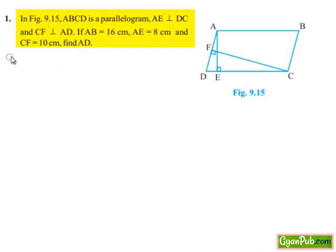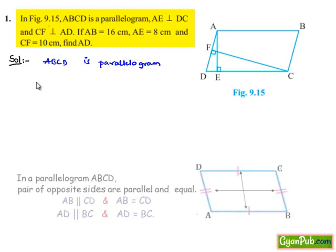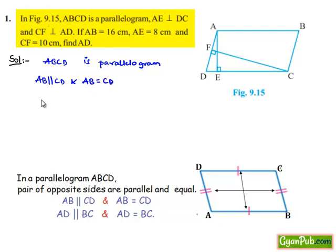Now moving on to solution. Let us note the given information that ABCD is a parallelogram. We know that in a parallelogram, opposite sides are parallel and are equal. Therefore, AB is parallel to CD and AB will be equal to CD. Similarly, AD will be parallel to BC and AD will be equal to BC.